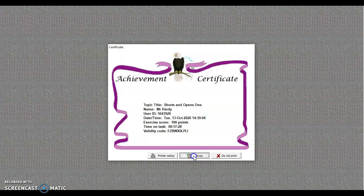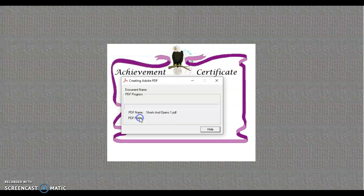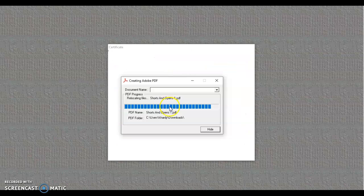Change your printer to Adobe PDF and make sure that's set up. Say okay. And then hit print. And then this will prompt you to save that file. And this is shorts and opens one. And then you can save that to your downloads or whatever it is that you're going to.